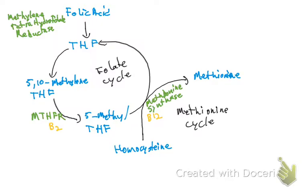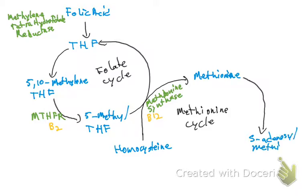This methionine then continues in the methionine cycle, where ATP comes in to provide energy to convert methionine to S-adenosylmethionine, also known as SAM.